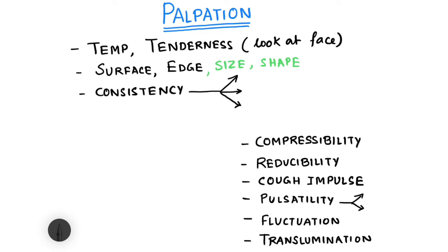Then we look for the surface - whether it's smooth or irregular. We check the edge of the lump - whether it's well-defined or ill-defined. Then we confirm our size and shape in palpation. Now consistency of the lump - how does the lump feel. The consistency can be hard, firm, or soft. Hard means if you tap over your forehead, the feel you get is hard. If you tap over the tip of your nose, that's firm consistency. If you tap over your ear lobule, that's soft consistency.